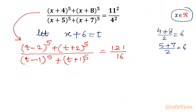Now I will use Pascal's triangle and binomial expansion. I need to draw Pascal's triangle for power 5. For power 2 it is 1 2 1, for power 3 it is 1 3 3 1, for power 4 it is 1 4 6 4 1, and for the required power 5 the coefficients are 1, 5, 10, 10, 5, 1.